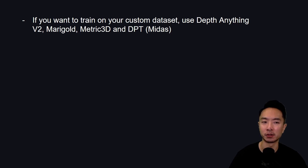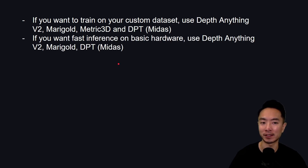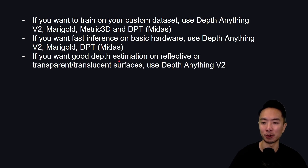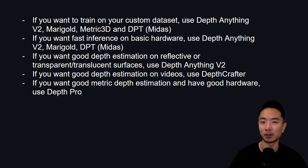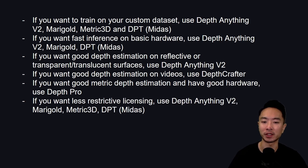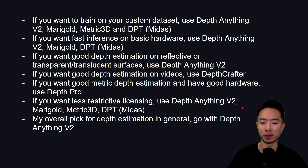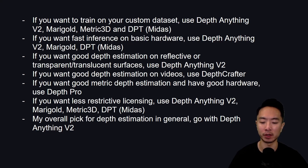Here are my recommendations. For training on a custom dataset: DepthAnything V2, Marigold, Metric3D, or DPT/MiDaS. For fast inference on basic hardware: DepthAnything V2, Marigold, or DPT. For reflective or transparent surfaces: DepthAnything V2. For video depth estimation: DepthCrafter. For metric depth with good hardware: DepthPro. For less restrictive licensing: DepthAnything V2, Marigold, Metric3D, or DPT. Overall, my top pick is DepthAnything V2, but it ultimately comes down to your dataset — test the models that seem best suited and see which gives the best results.